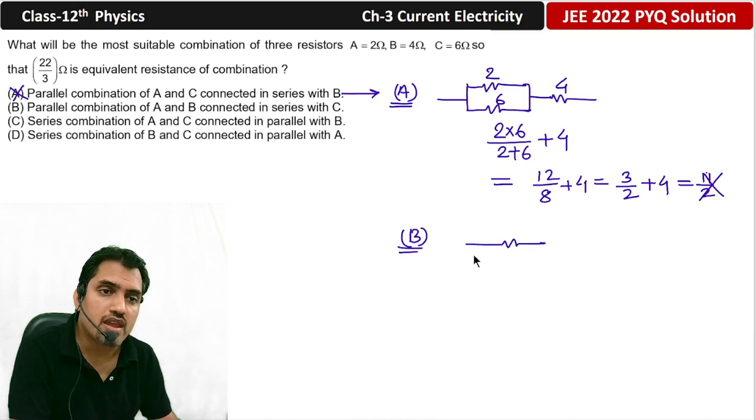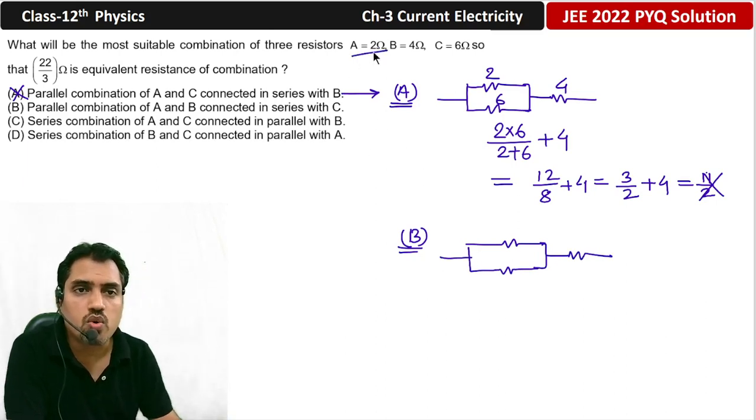So, let's see here A and B are in parallel. So, A means 2 ohm, B means 4 ohm and C means 6.